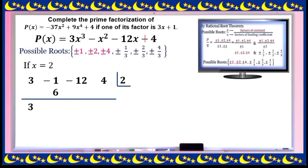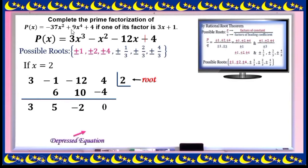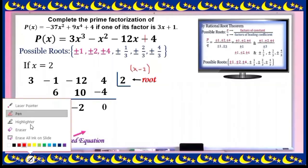Try x = 2 using synthetic division on 3, -1, -12, 4: bring down 3, multiply by 2 gives 6, add to -1 gives 5, multiply by 2 gives 10, add -12 gives -2, multiply by 2 gives -4, add 4 gives 0. Remainder is 0, so x = 2 is a root. Converting to a factor: x - 2.